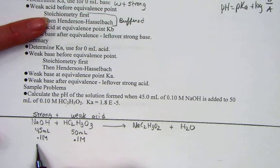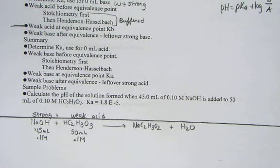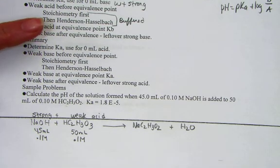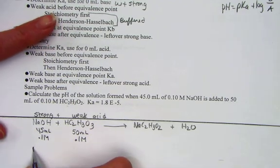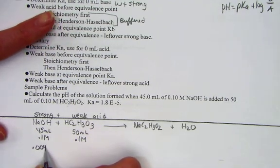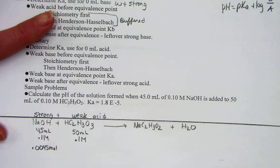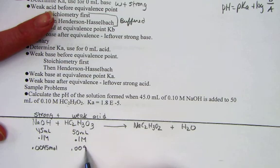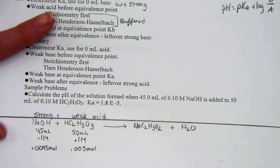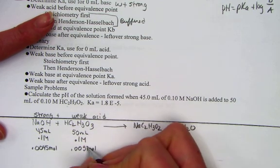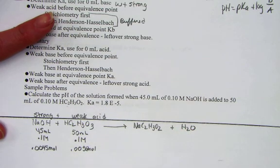45 mL times 0.1 molar can get us something called millimoles, but I like to just use mol, molarity times liter to pull out the number of moles. So I hit 0.045 times 0.1 and I get 0.0045 moles of our base. 0.05 times 0.1 pulls out 0.005 moles of the acid.